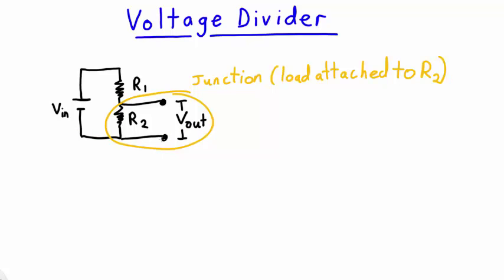Using our formula for resistors in parallel, we get the total resistance across the junction: 1 over the resistance of the junction is equal to 1 over R2 plus 1 over the resistance of the load, whatever the resistance of this load here is.